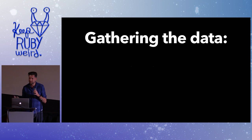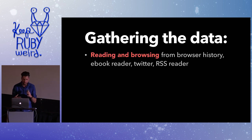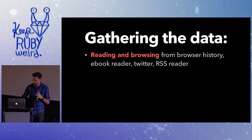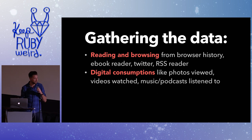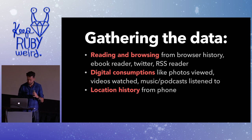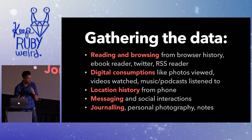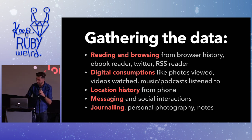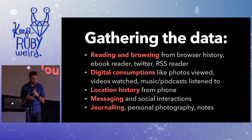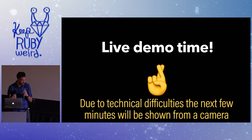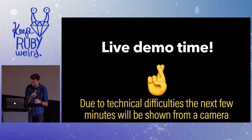The biggest problem so far has been gathering the data. I'm trying to make it all-encompassing: everything I read or see, my browser history, digital consumption like photos, videos, music and podcasts, location history from my phone, messaging and social interaction from Slack and email, and soft data like journaling, notes, and annotations. I wrote importers and scrapers for all these services and put them in one place. I'm going to do a little demo now — this is the part that can go disastrously wrong.